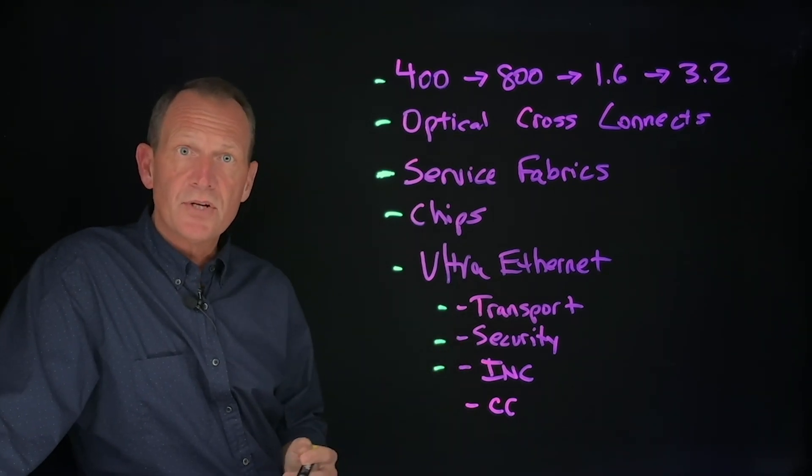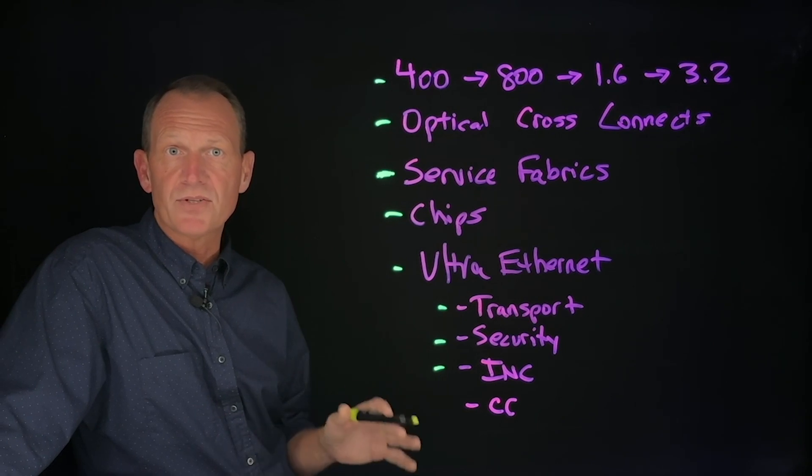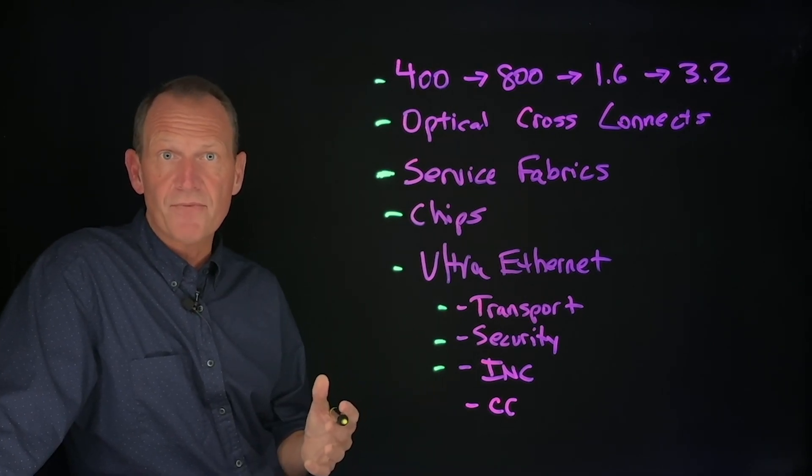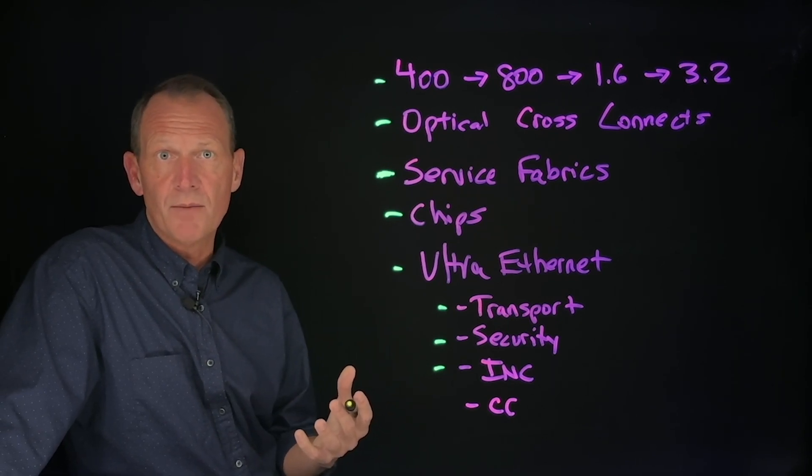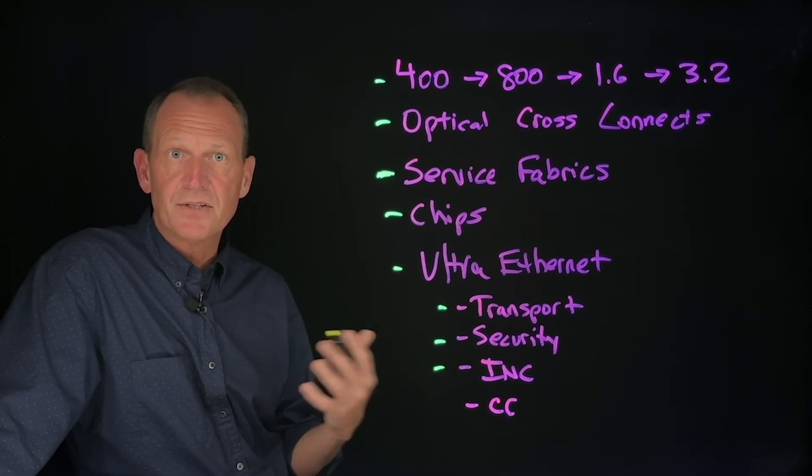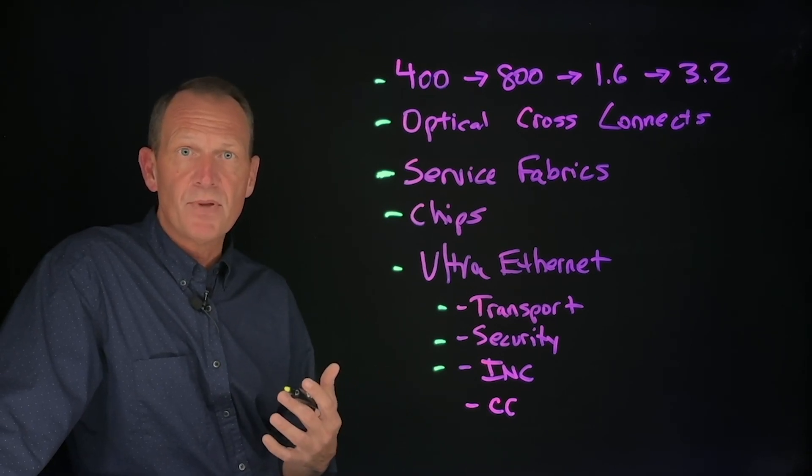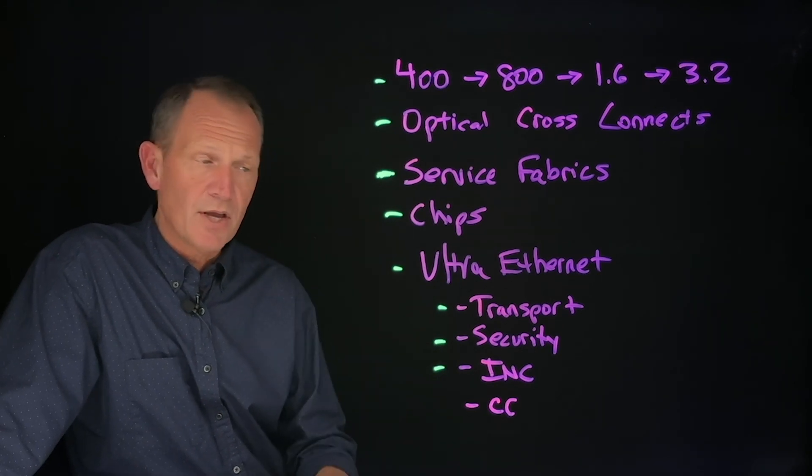In-network compute is an interesting area. This is the idea that you would embed capabilities in the network itself to process traffic, to process DMA traffic, Ultra Ethernet traffic. Think of a store and forward model for these bulk data, instead of having to go from end to end. The network no longer is just a highway. It actually provides capability to store and act on that data if necessary.